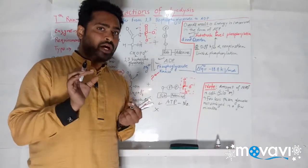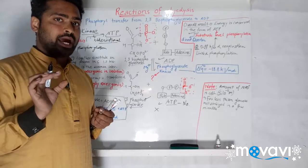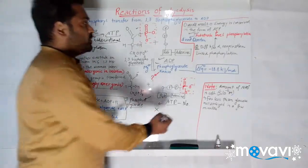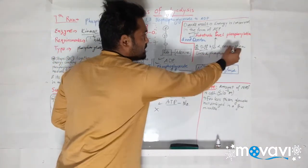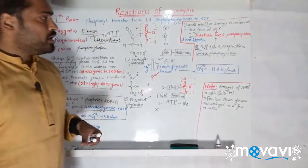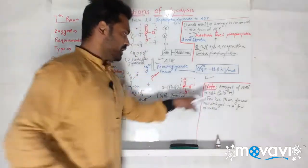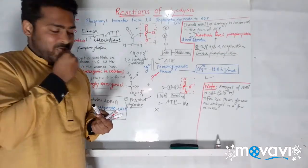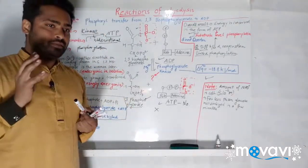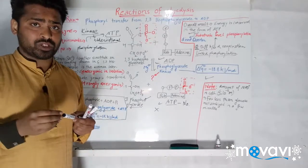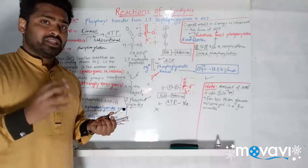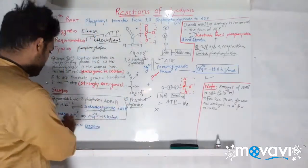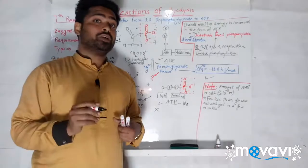A question for you: find the difference between substrate-level phosphorylation and respiration-linked phosphorylation — these two are different. Now, we know what NAD⁺ and NADH are. When glucose is metabolized, we oxidize it in the sixth reaction with NAD⁺, and in doing so NAD⁺ is converted into NADH.